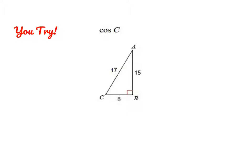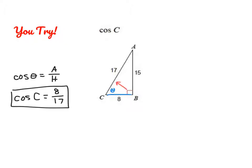Pause the video and give this problem a try. The ratio for cosine is always adjacent over hypotenuse. Here's angle C — the adjacent leg is CB, which has a length of 8, and the hypotenuse has a length of 17. So cosine of angle C is 8 over 17.